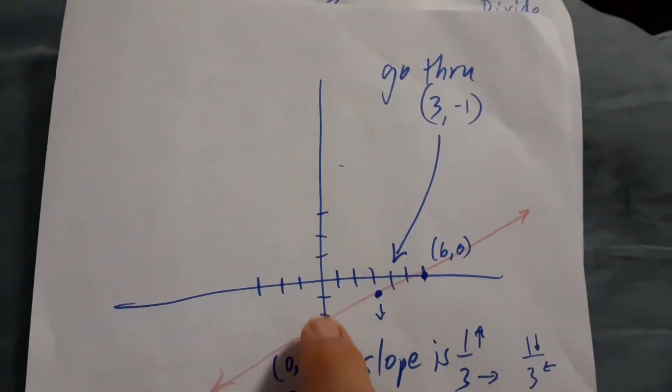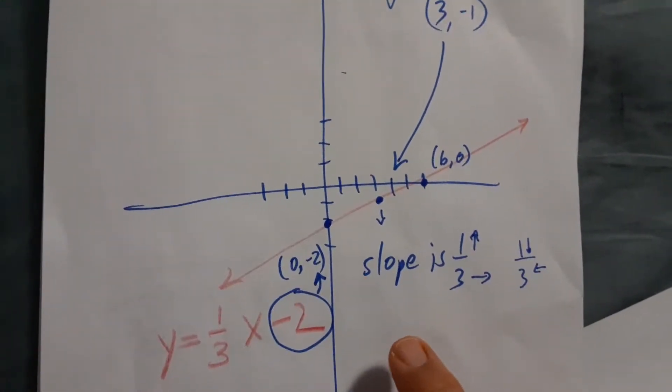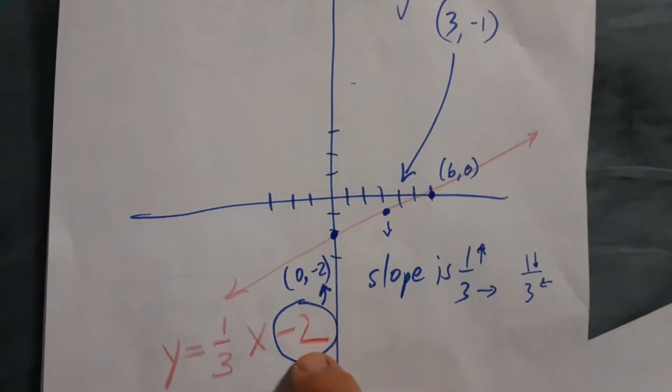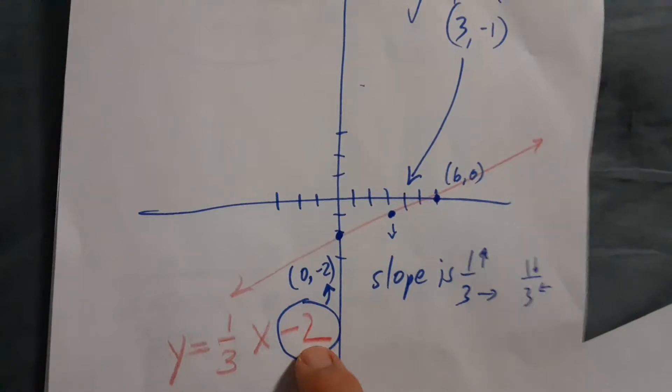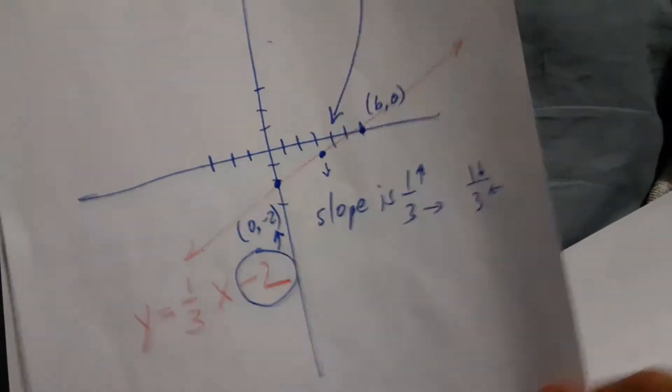The key is that it goes through 0, negative 2. 0 comma negative 2 gives me an intercept on the y-axis of negative 2. And that's a positive result there.